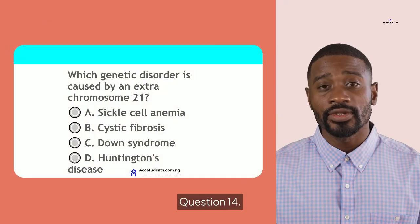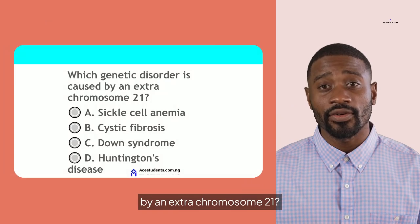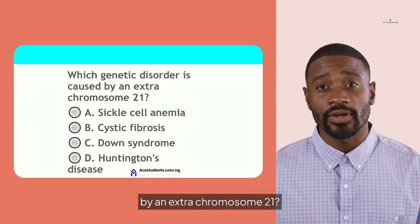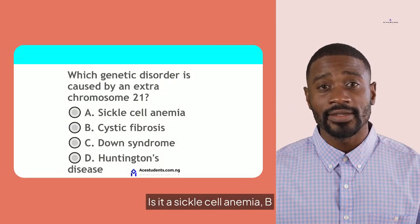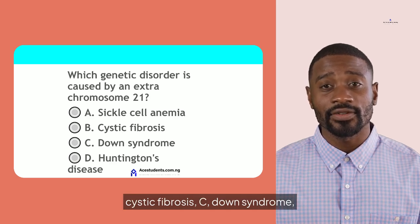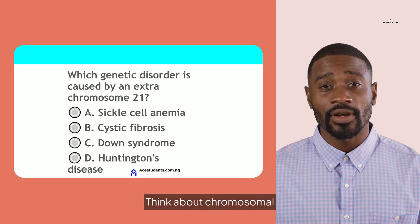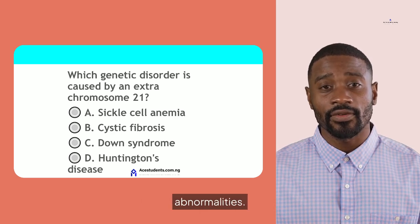Question 14. Which genetic disorder is caused by an extra chromosome 21? Is it A. Sickle cell anemia, B. Cystic fibrosis, C. Down syndrome, or D. Huntington's disease? Think about chromosomal abnormalities.